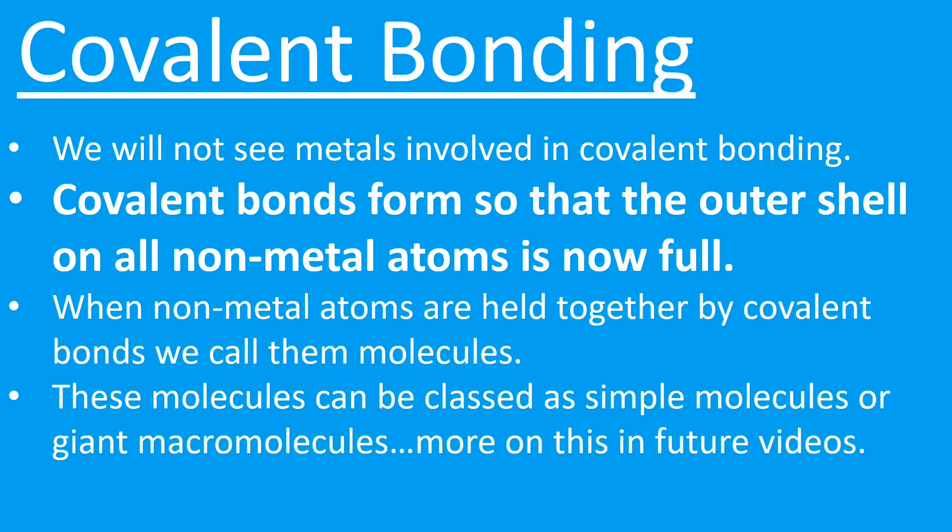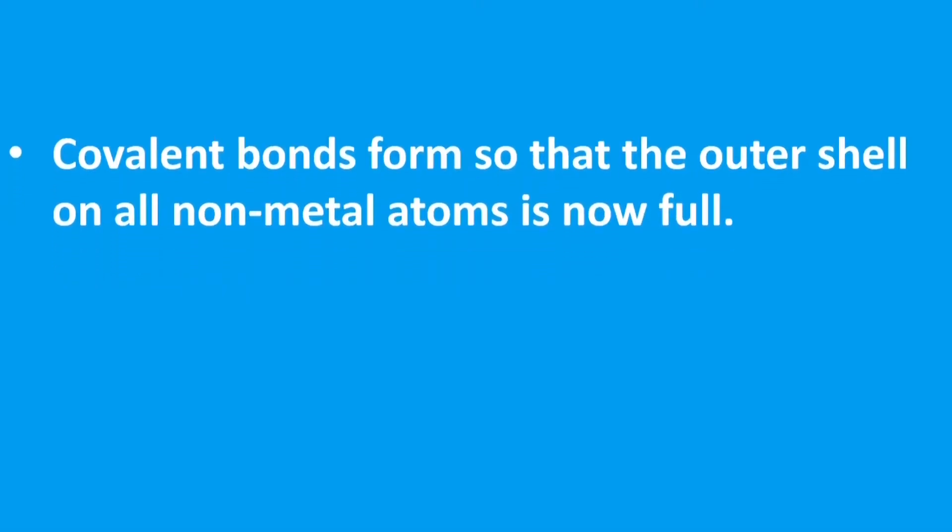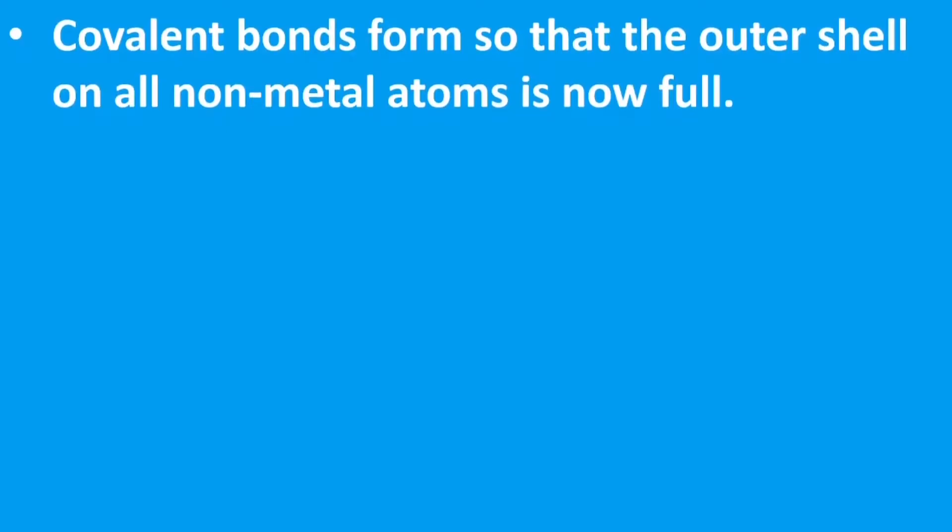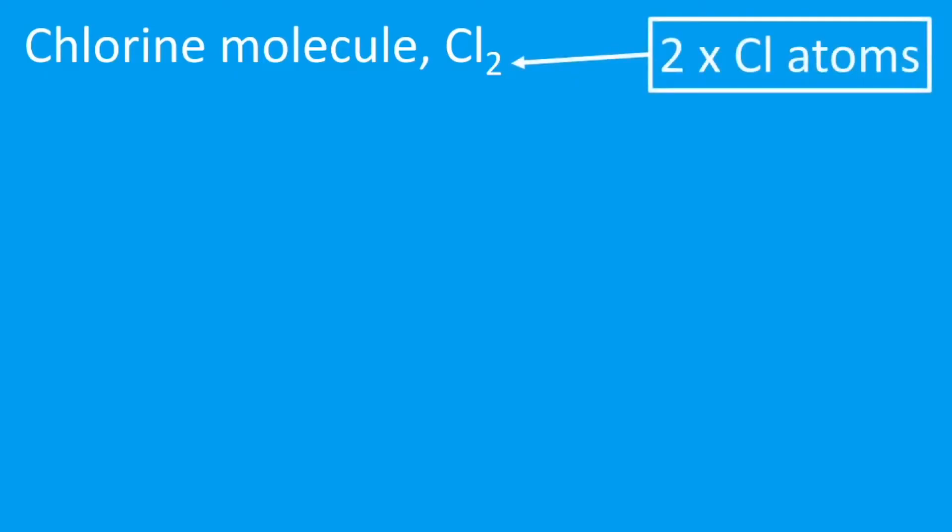When non-metal atoms are held together by covalent bonds, we call them molecules. These molecules can be classed as simple molecules, which is all we need to look at in this unit, or they can be giant macromolecules—there'll be more of this in future videos. This is the key point then: we must always end up with full outer shells.